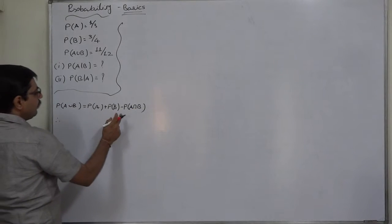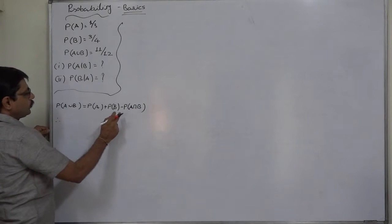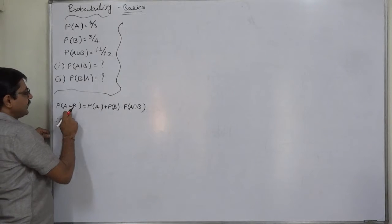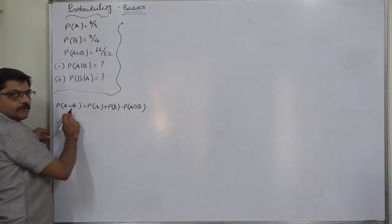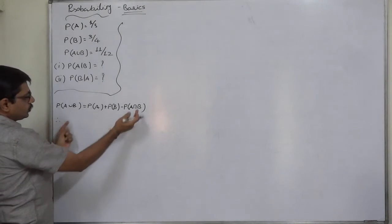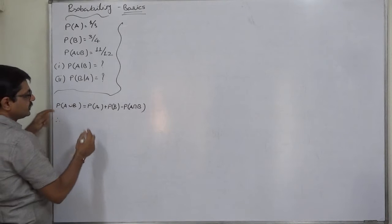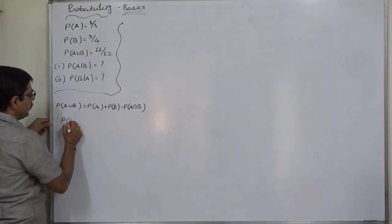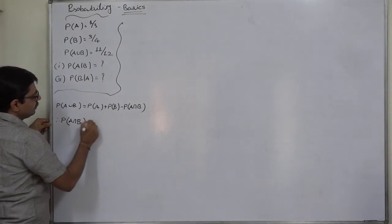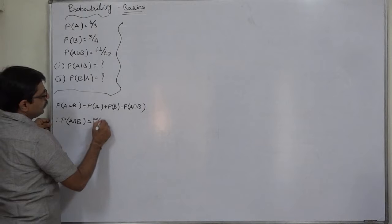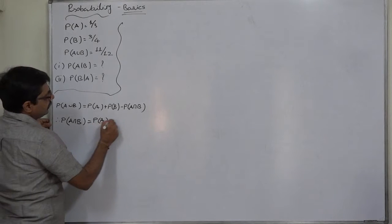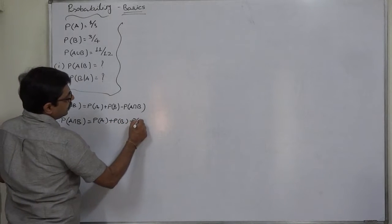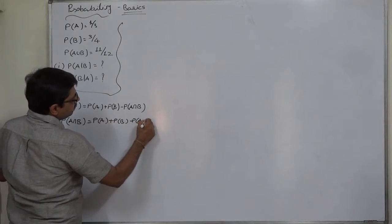Now we have to find P(A∩B). Since P(A∪B) is already available, we can rearrange the formula. So P(A∩B) = P(A) + P(B) − P(A∪B).